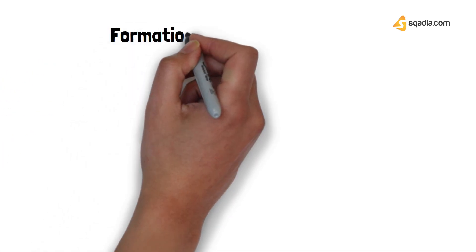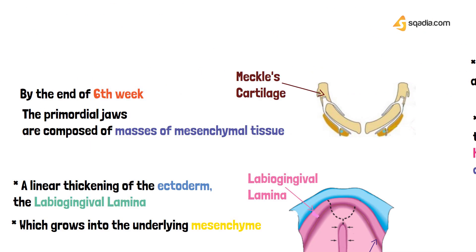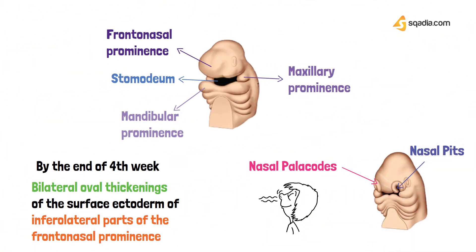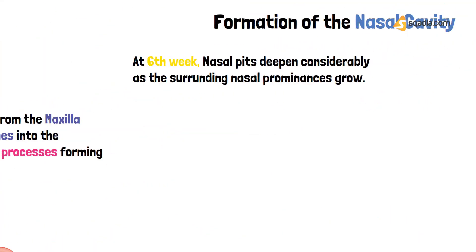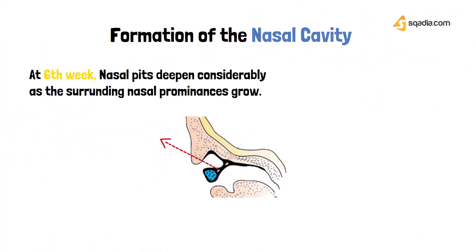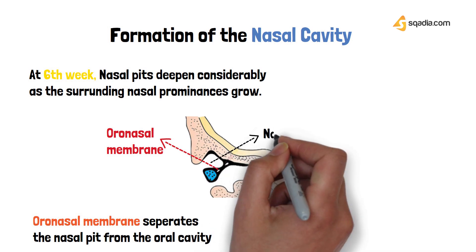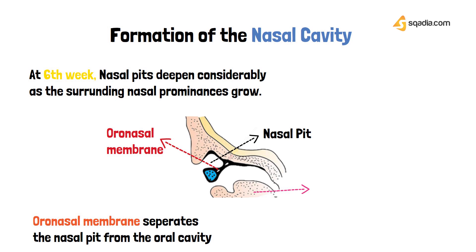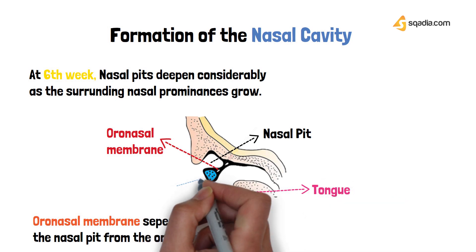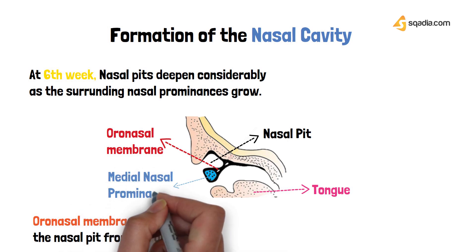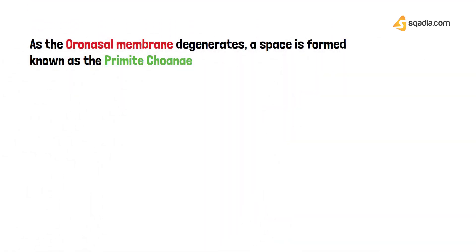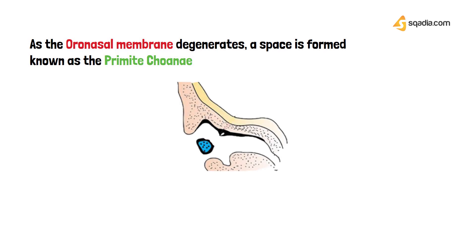Moving on to the formation of the nasal cavity: at the sixth week, the nasal pits deepen and considerably grow as the surrounding nasal prominences also grow. The oronasal membrane separates the nasal pit from the oral cavity. Just next to the membrane we have the nasal pit, below it the tongue, and the medial nasal prominence forms part of the surrounding structure.